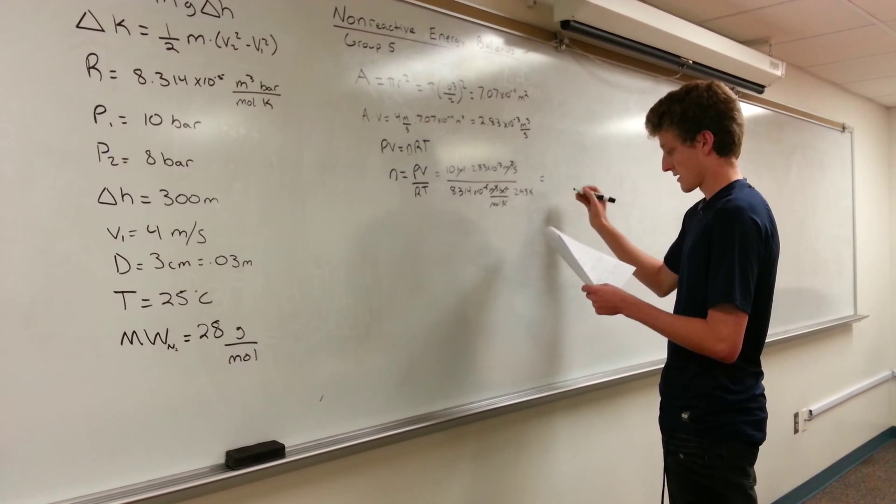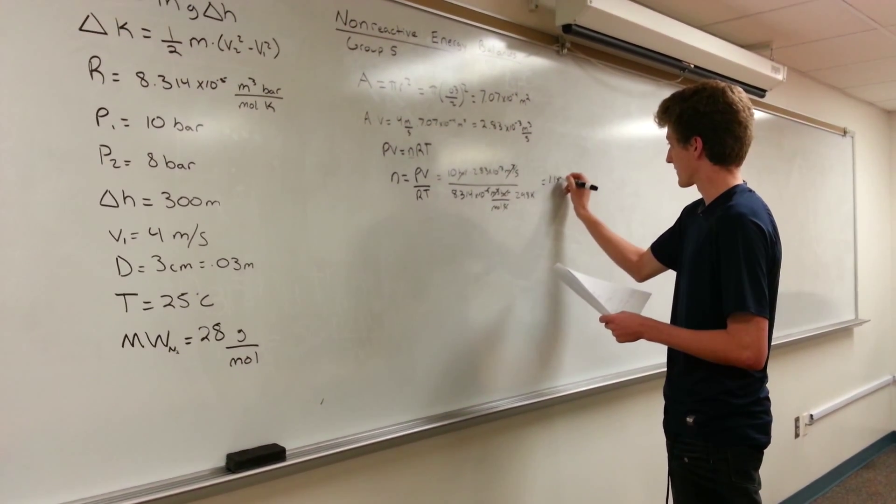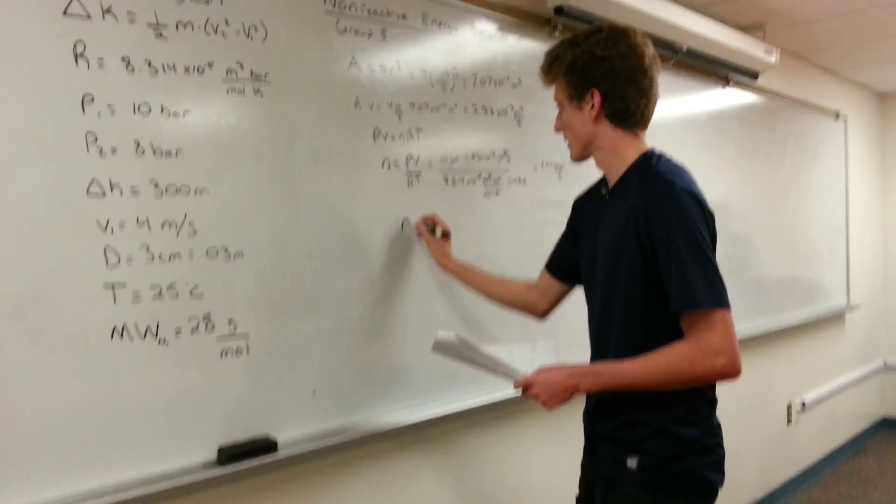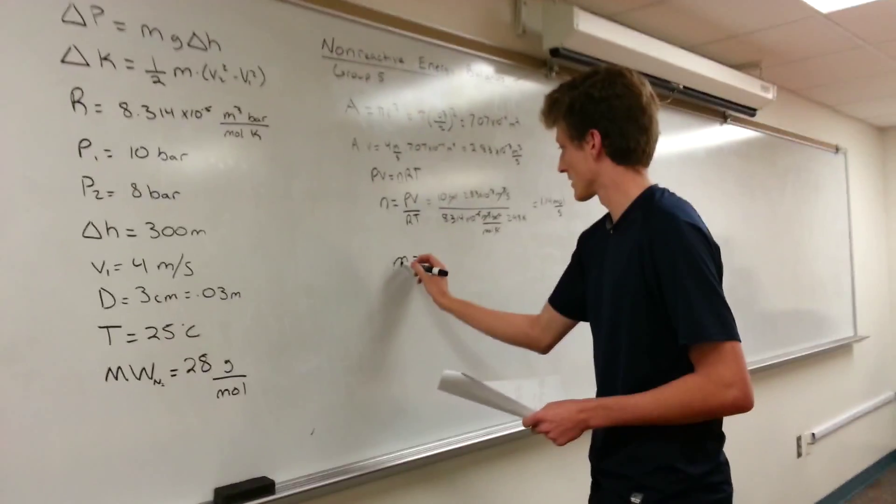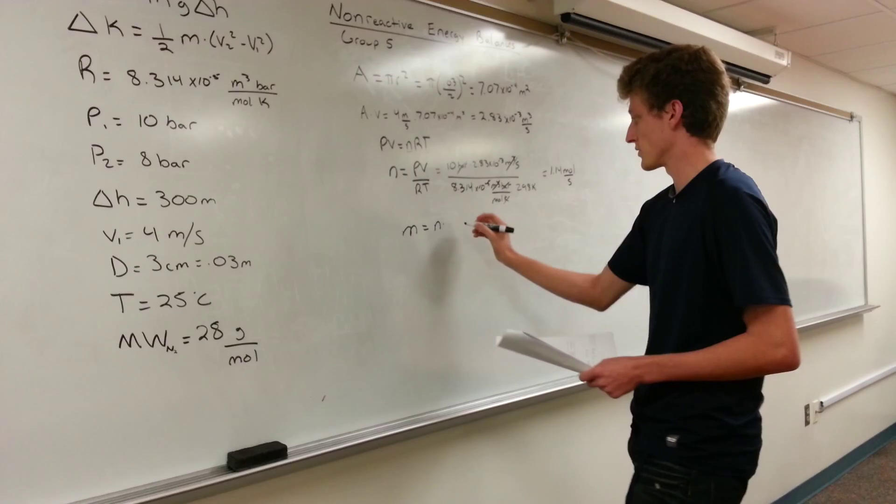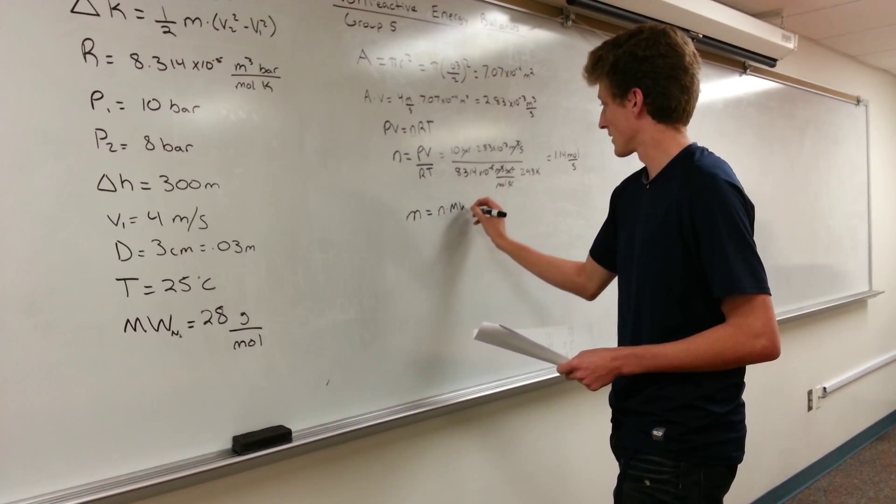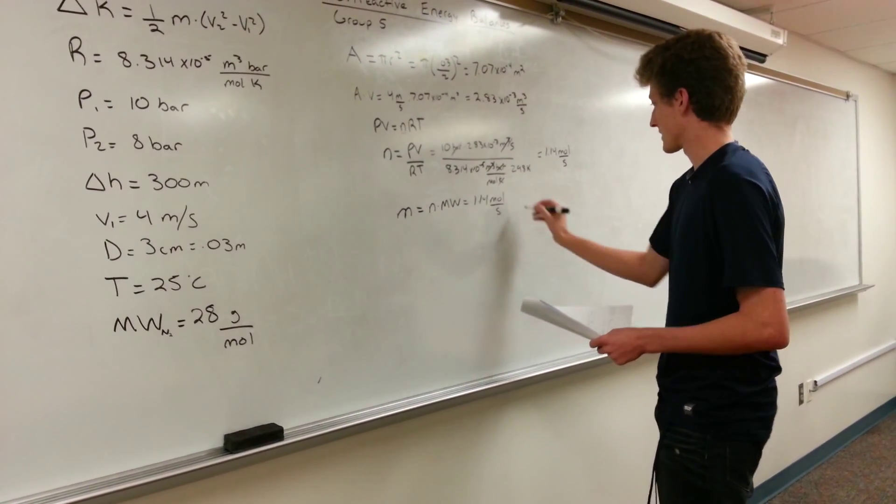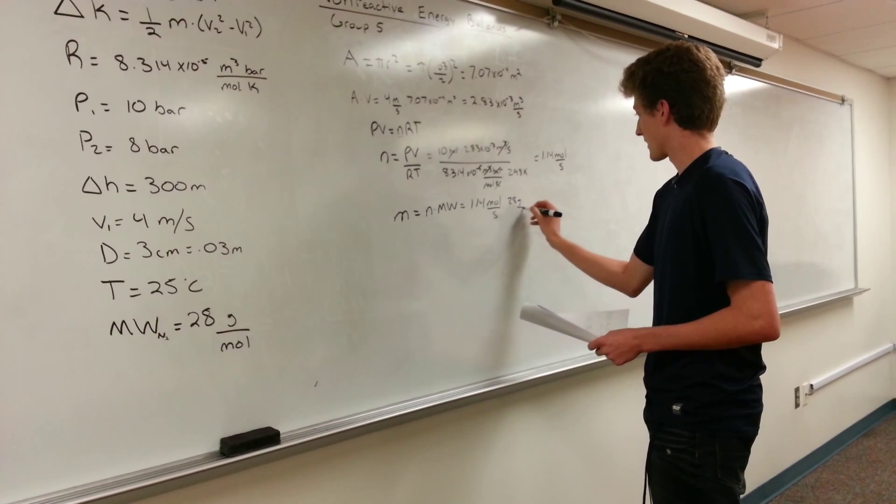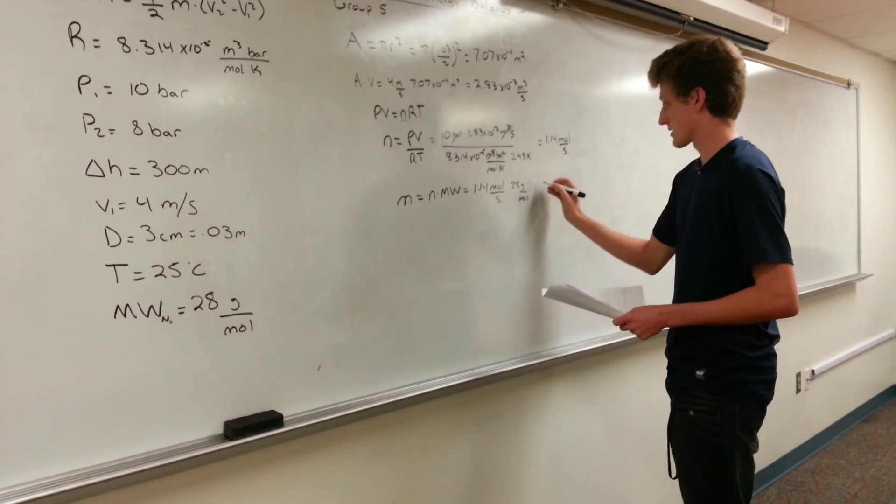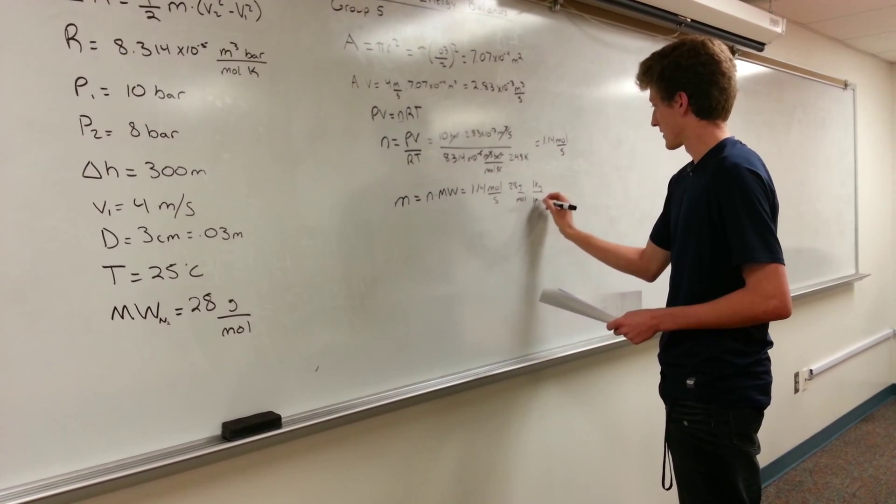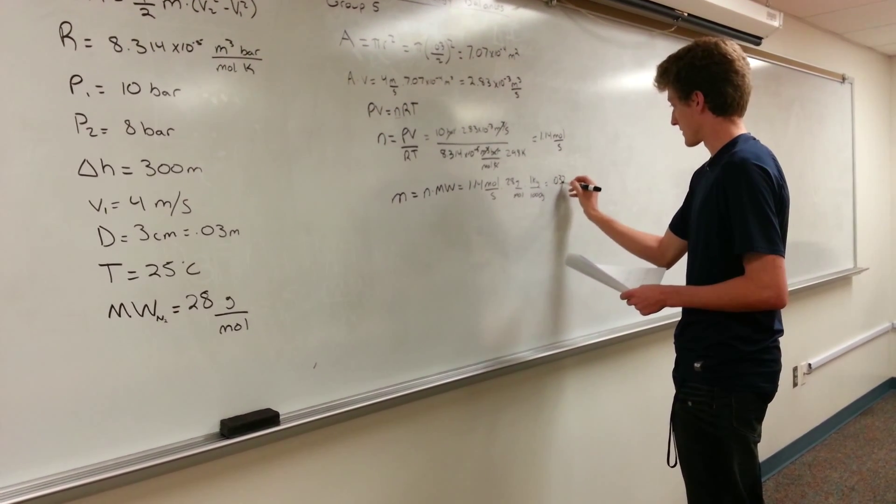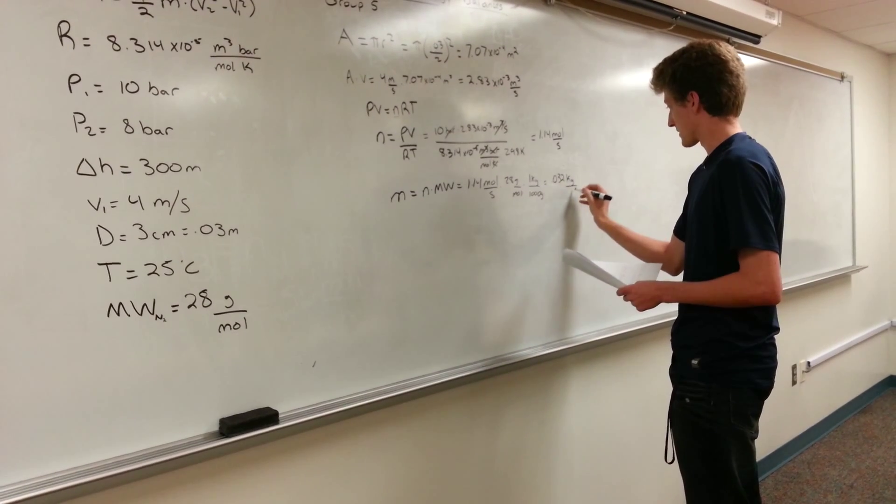We then convert this to mass by multiplying our moles times our molecular weight, which equals 1.14 moles per second times 28 grams per mole, and we convert this to kilograms. This gives us a value of 0.032 kilograms per second.